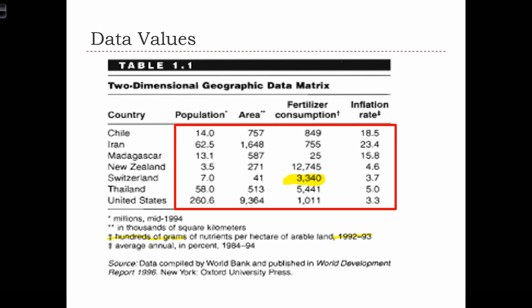For example, these numbers don't mean very much by themselves, but because they're organized in a data set in this way, we know that each data value pertains to a specific observation and a specific variable. So in this case, the number 3340. If I were to ask you what that number is pertaining to, you can look across the table and know that this number is something about the country Switzerland, and you can look up to the variable name and know that it's something about fertilizer consumption. So you put the two together and 3340 is the amount of fertilizer consumed in Switzerland.